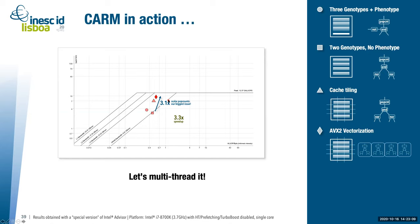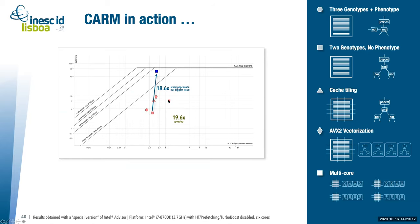Once we achieved what we could on a single core, we naturally wanted to run a multi-core version of our code. We got around 20 times speedup on a six-core Intel machine, and around 18.6 times improvement in performance.